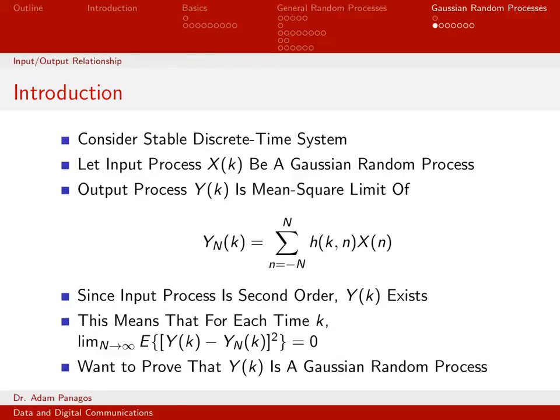For doing this proof, we're going to assume we're working with a discrete time system and discrete time random processes. You can also do this proof for continuous time systems, but the math gets a little more tedious because the integral expressions have to be replaced with their limiting form as a Riemann integral with a limit and a summation. So let's stick with discrete time systems for this proof.